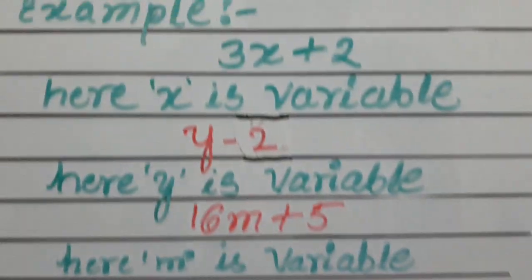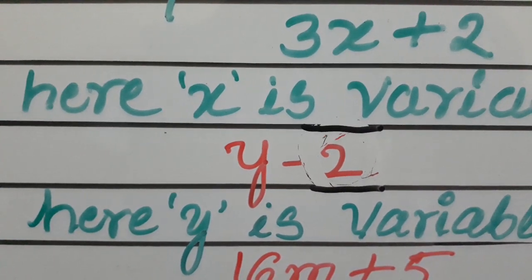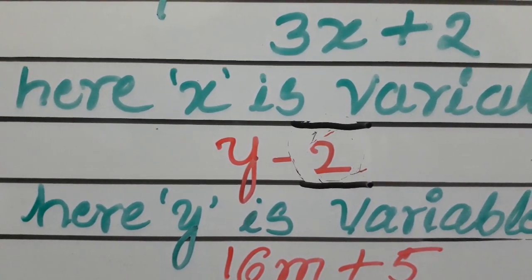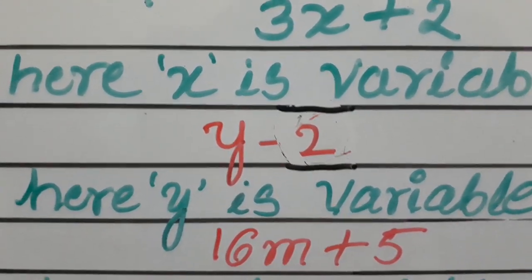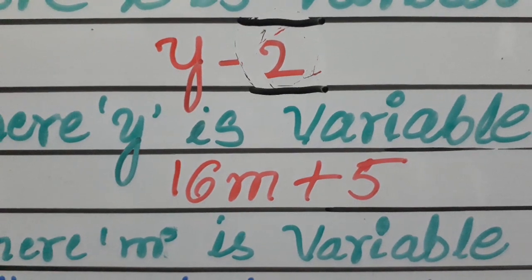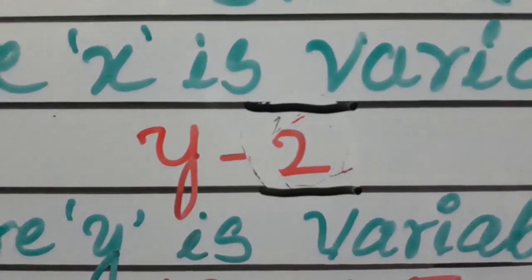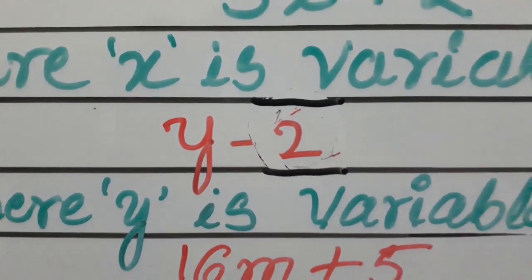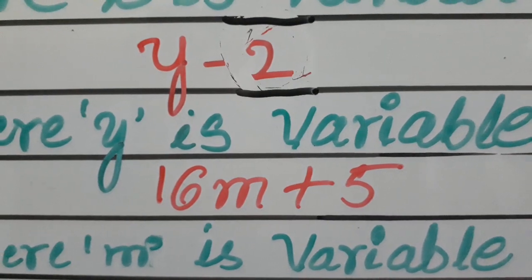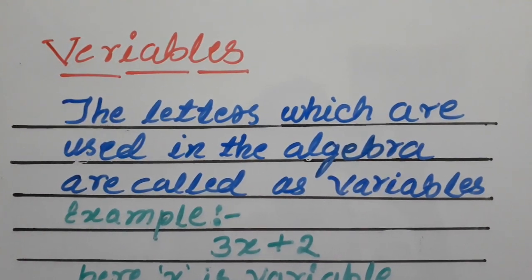In example number 2, Y minus 2 — what is the coefficient of Y? If there is no number written with the variable, then it should be 1. In example number 3, 16M plus 5 — the coefficient of M is 16. Now what is the constant in the second example, Y minus 2? Yes, 2 is the constant. And in the third example, 5 is the constant.